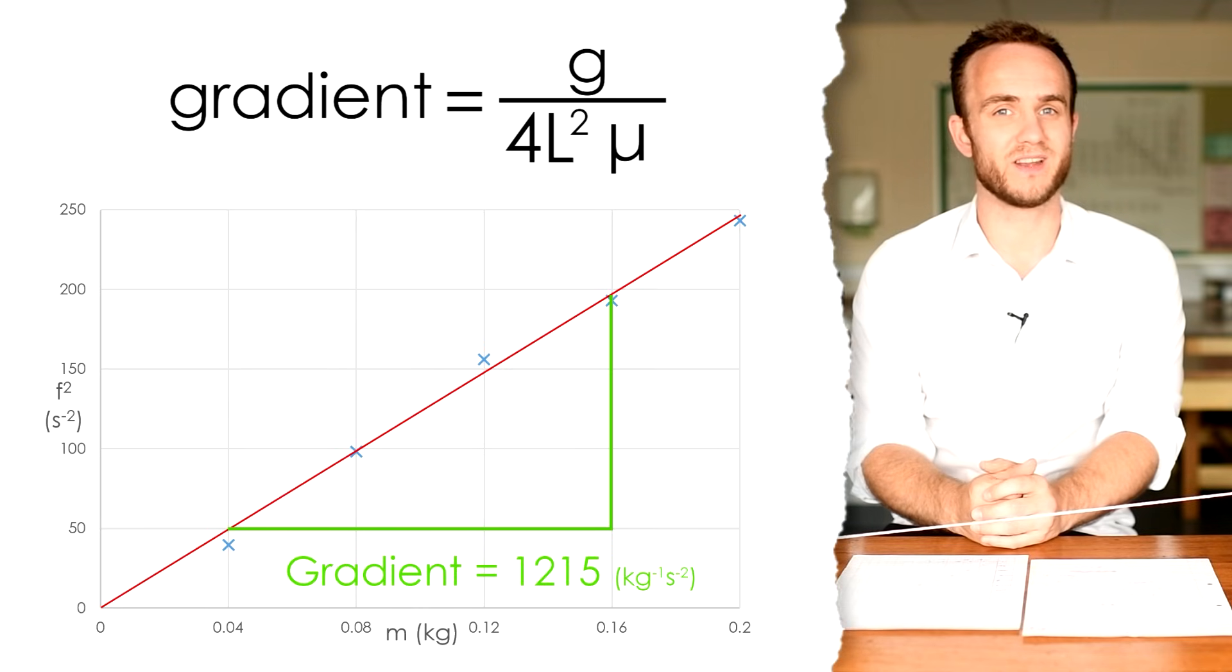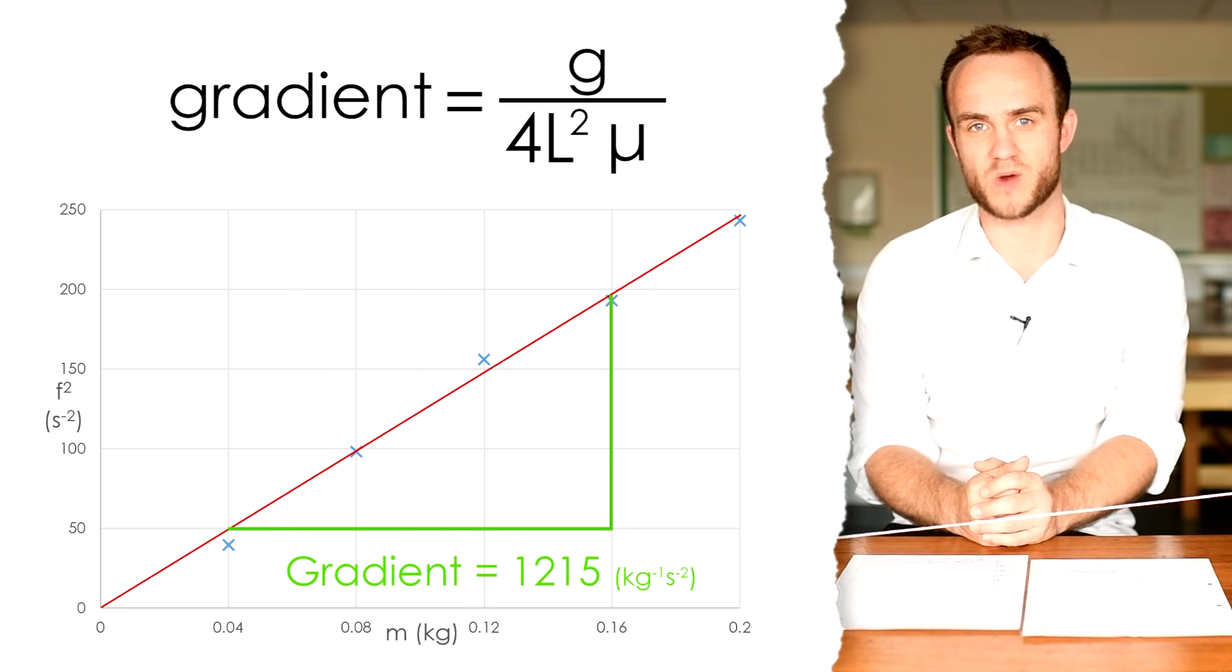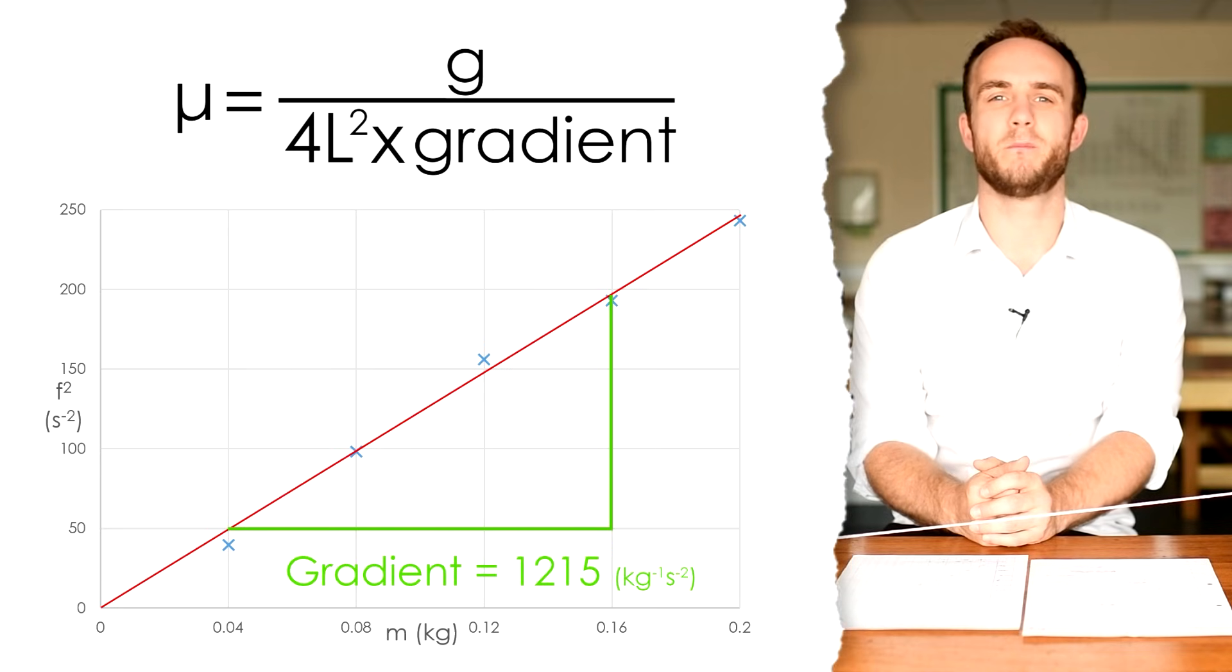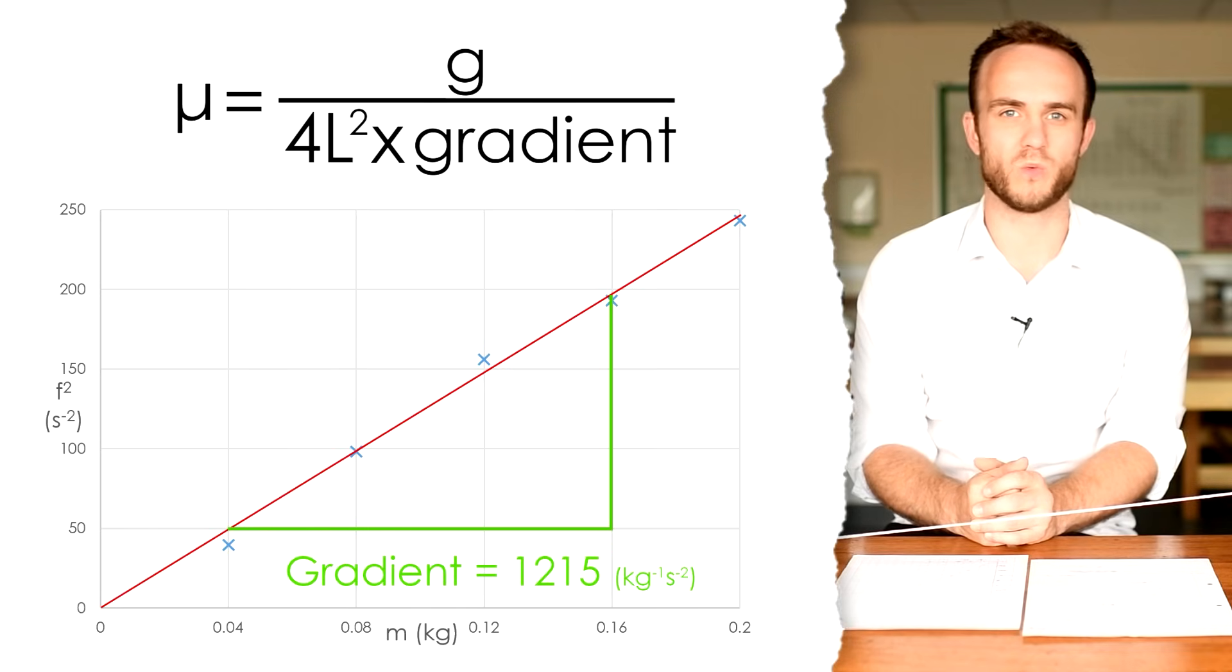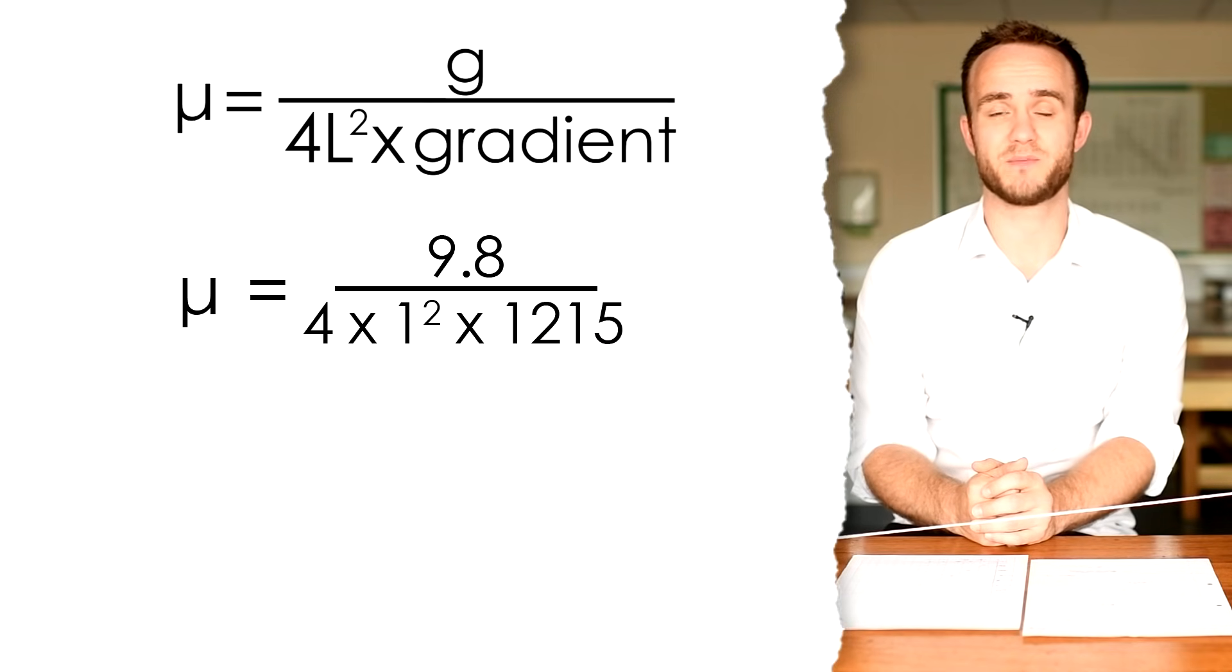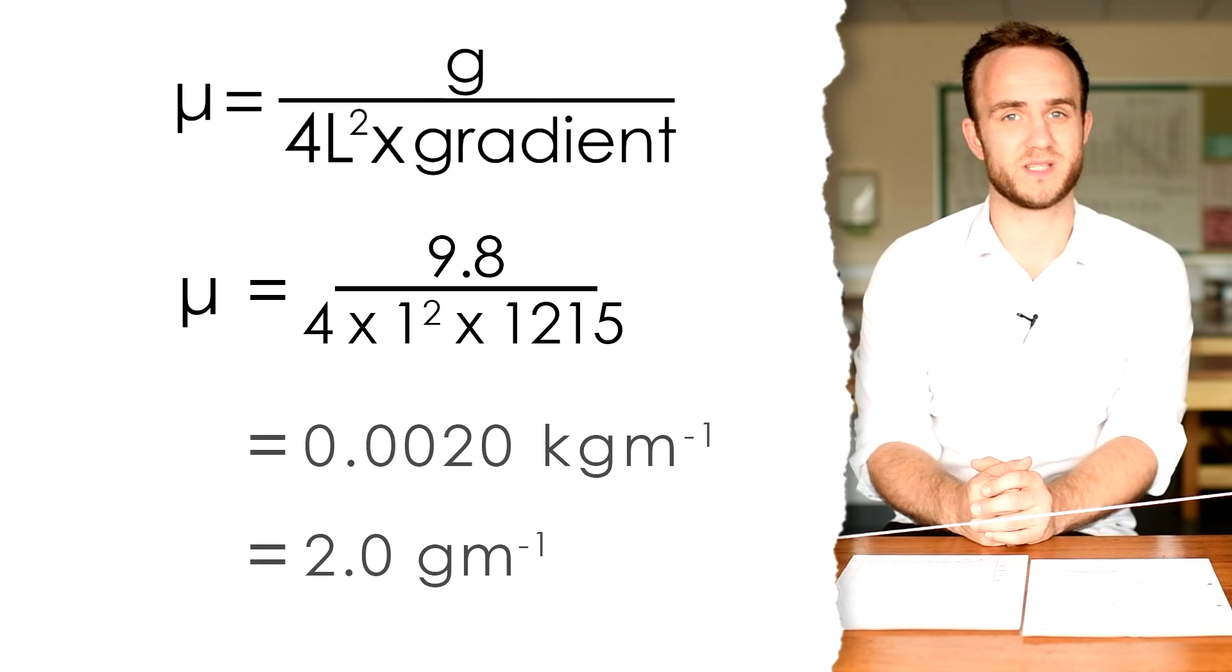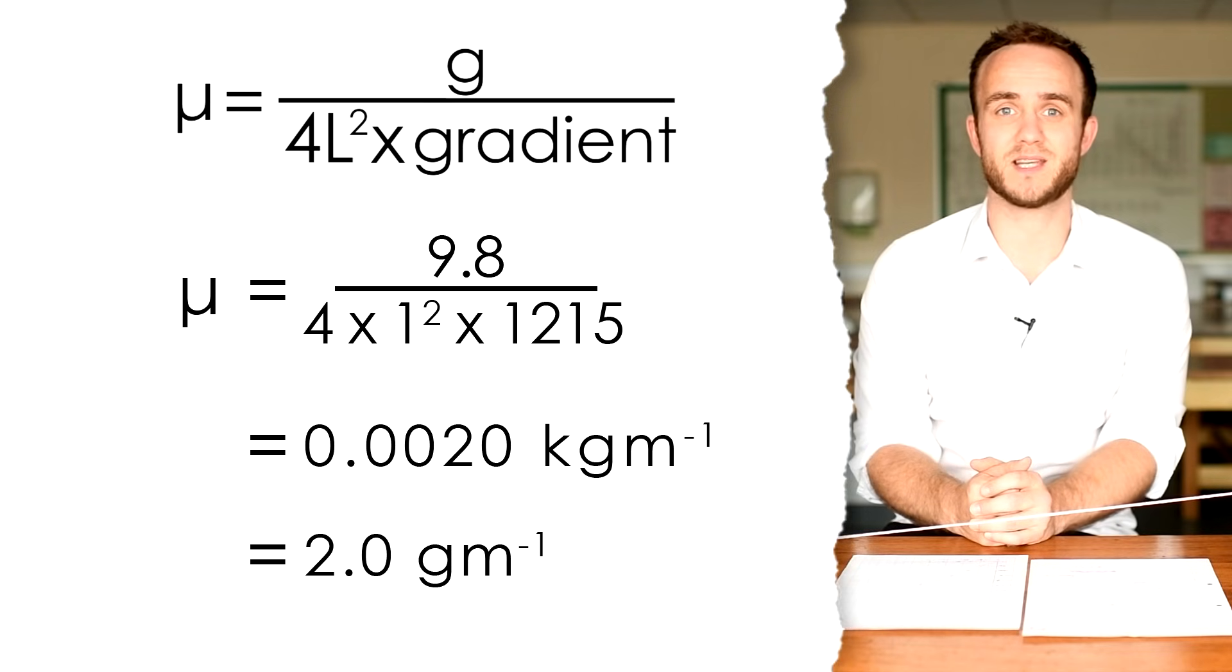Now that we've done that, we can actually check whether we have the correct value for mu or not. What we have to do is swap around the gradient and mu, and we end up with mu equals G over 4L squared times the gradient. What's that going to be in numbers? 9.8 divided by 4 times 1 squared times the gradient. So, just 9.8 divided by 4 times 1,215. And that gives me 0.0020. The unit of this is kilograms per meter. Converting it into grams per meter, that's 2 grams per meter.